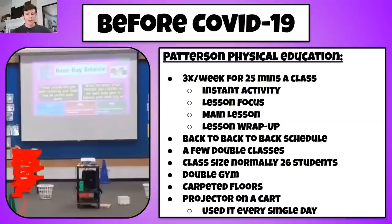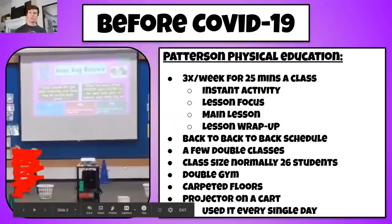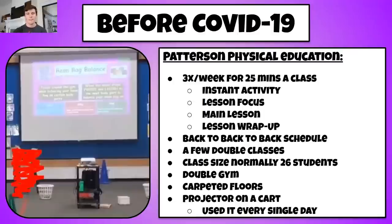By contract I can have up to 10 double classes a week, but this year I only had three. I'd rather have a smaller class size so I can really engage with students. Normally I have about 26 kids per class, though it ranges from 19 to 32. I also have students with special needs blended into the gym — sometimes with an adaptive PE teacher or a TA. I've got carpeted floors and the projector out. It's literally the biggest game changer to my teaching.